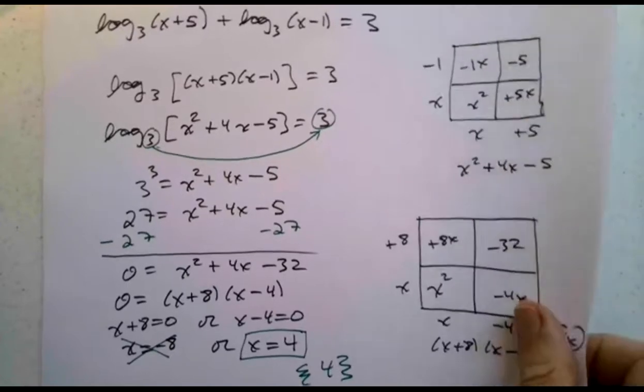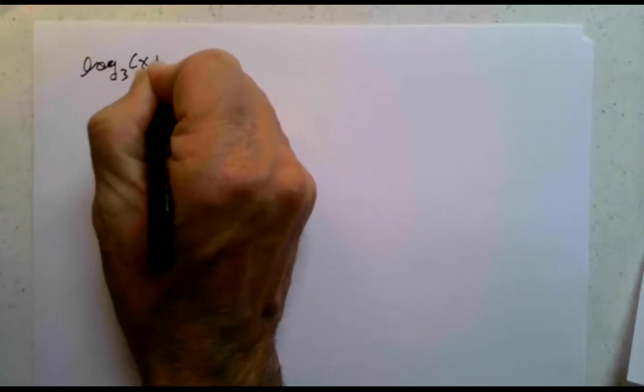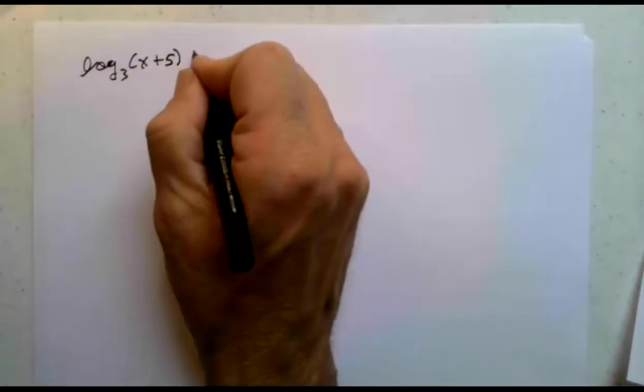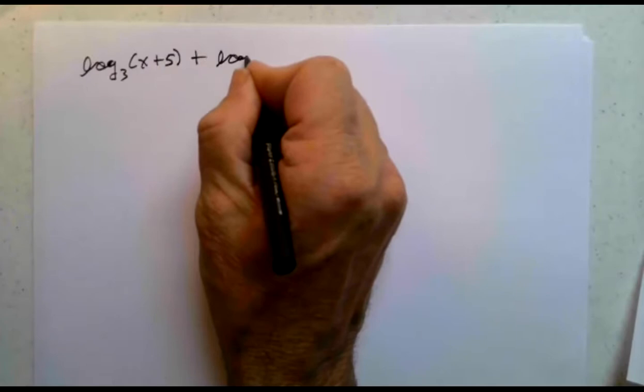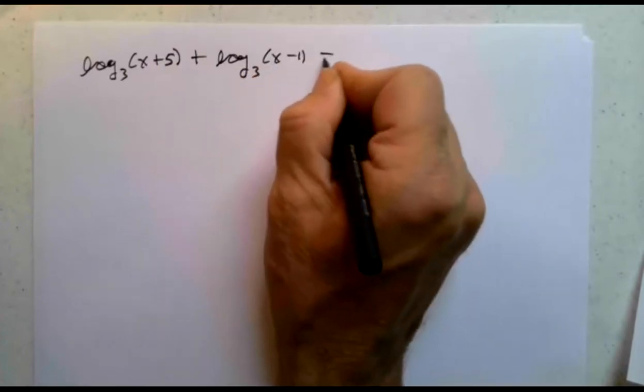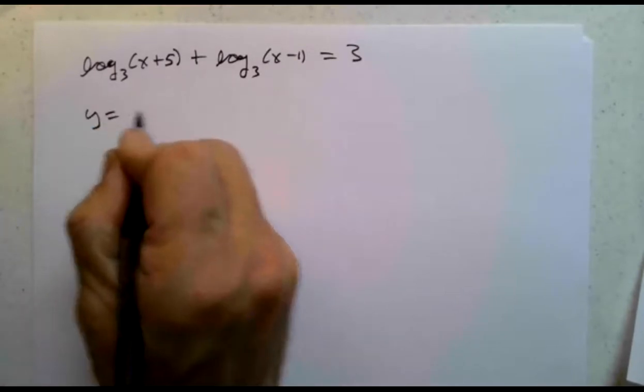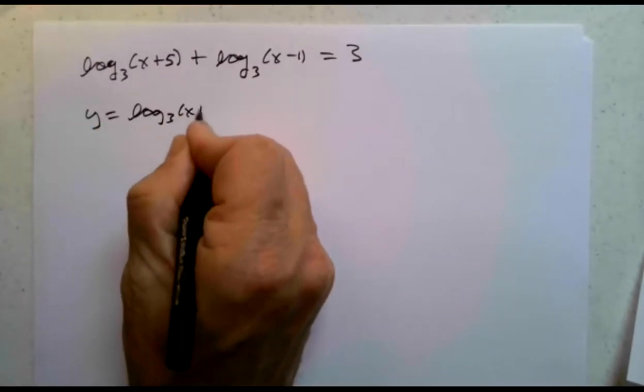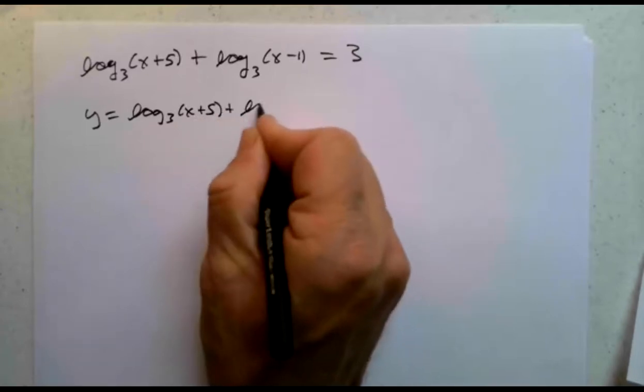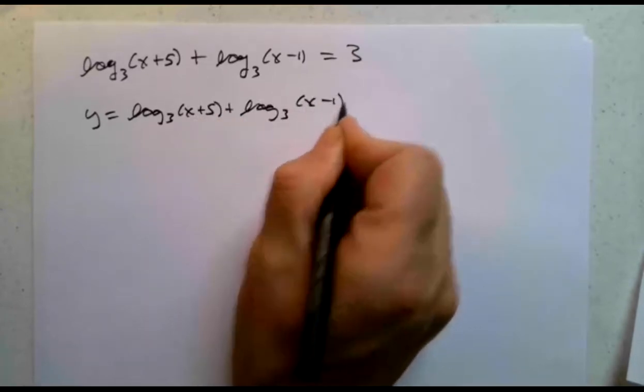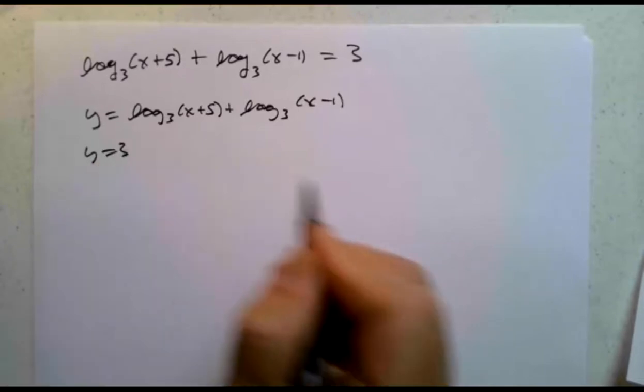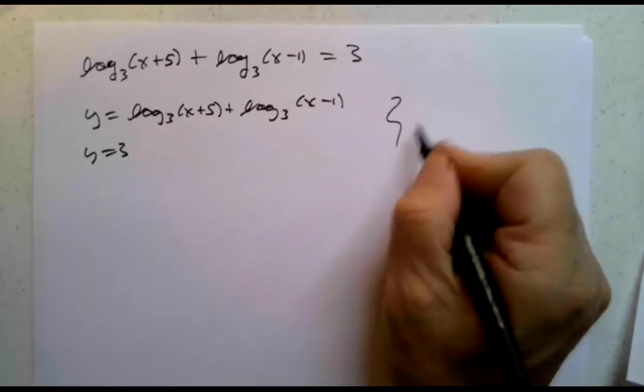So where am I at now? I have log 3 of x plus 5 plus log 3 of x minus 1. I want that to equal 3. So I think I'm going to graph two functions. I'm going to graph log 3 of x plus 5 plus log 3 of x minus 1. I'm going to look at that graph, and I'm also going to graph y equals 3. I believe they should intersect when x equals 4.